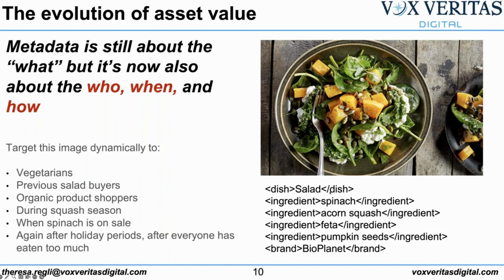This might mean knowing that particular keywords like pumpkin seeds, acorn squash, spinach, and salad are appropriate for vegetarians, previous salad buyers, people who like organic products, during squash season when spinach is on sale, or after holidays when everybody's eaten too much. This is what the evolution of DAM is about — adding more value to assets in relation to the customer and powering the customer experience. Who are we targeting, when are we targeting them, and how? That is the key evolution and a big difference between DAM in 2008 versus now.